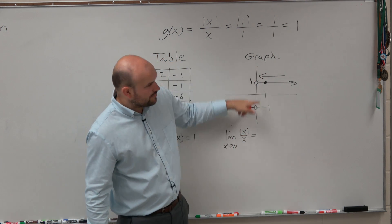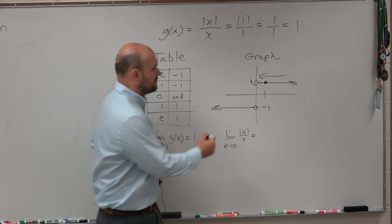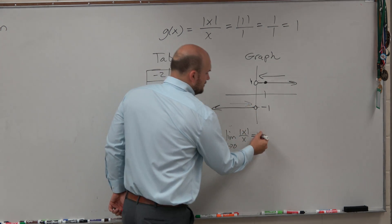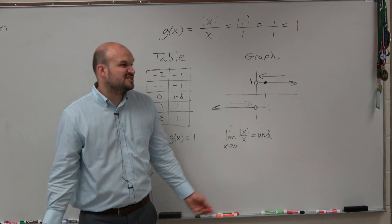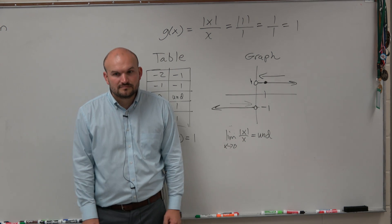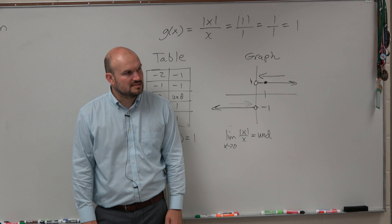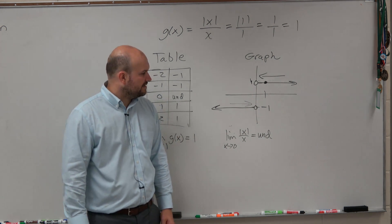So since we're not approaching the same value from the left and from the right, this limit is undefined or does not exist. Usually the limit just says does not exist. It does not exist.